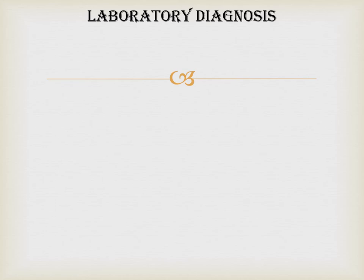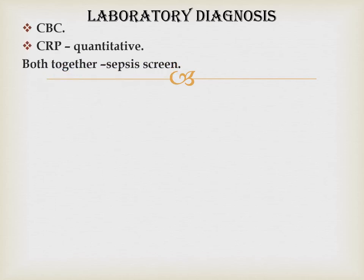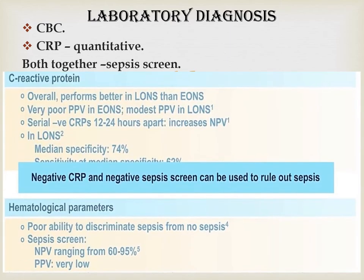For laboratory diagnosis of neonatal sepsis, CBC and CRP — ideally quantitative C-reactive protein — should both be done and are referred to together as the sepsis screen. C-reactive protein performs better in late onset neonatal sepsis than early onset neonatal sepsis, and has a very poor positive predictive value in early onset sepsis. Serially negative CRP measurements 12 to 24 hours apart increase the negative predictive value. Negative CRP and negative sepsis screen can be used to rule out sepsis, whereas positive CRP and positive sepsis screen are not specific enough to rule in sepsis.